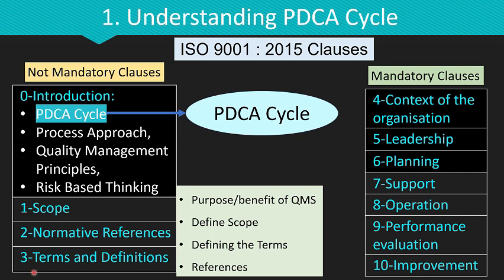ISO 9001:2015 has 11 clauses in total, starting from clause 0 (the introduction clause) to clause 10. From clause 0 to clause 3, they are not mandatory clauses for implementation of ISO 9001:2015. Even though these four clauses are not mandatory, they still provide the purpose, benefit and scope of the standard, and define important key terms found in ISO 9001:2015. In general, these four clauses are essential for better understanding of ISO 9001:2015.